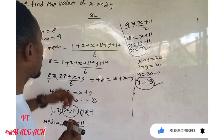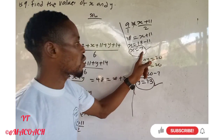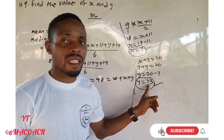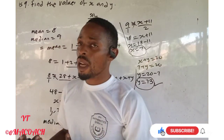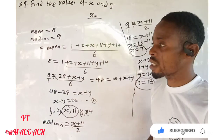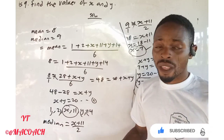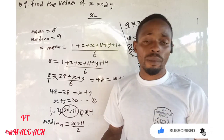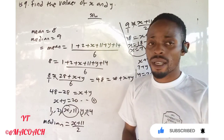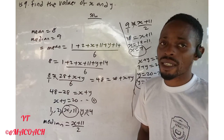So the values are: s = 7 and y = 13. That is how we solve this question. If you understood, don't forget to subscribe, like, or turn on the notification bell for new videos. Thank you for watching — see you in the next class.